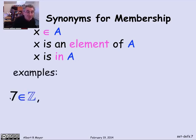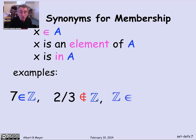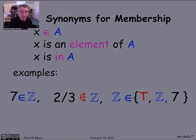For example, 7 is a member of the integers. Z is our symbol for the integers. 2/3 is not a member of the integers because it's a fraction. On the other hand, the set Z of integers itself is a member of this three-element set consisting of the truth value T, the set of all integers, and the element 7. So here's an example where a set can contain sets, quite big ones even, and that's not any problem mathematically.